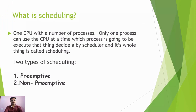Do you know what is scheduling? One CPU with a number of processes — only one process can use the CPU at a time. Which process is going to be executed is determined by a scheduler, and this whole thing is called scheduling.